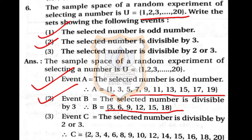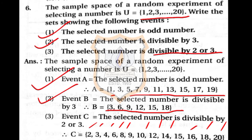Third event: the selected number is divisible by 2 or 3. Multiples of 2 up to 20: 2, 4, 6, 8, 10, 12, 14, 16, 18, 20. Additional multiples of 3 not already listed: 3, 9, 15. So Event C is {2, 3, 4, 6, 8, 9, 10, 12, 14, 15, 16, 18, 20}.